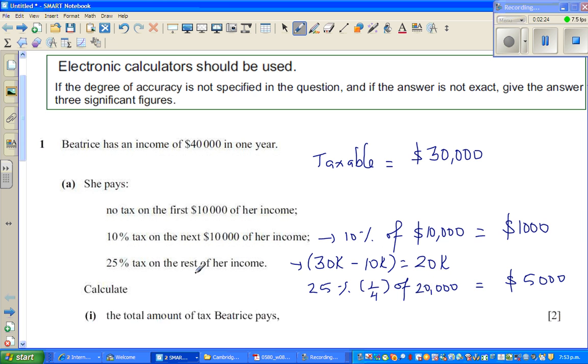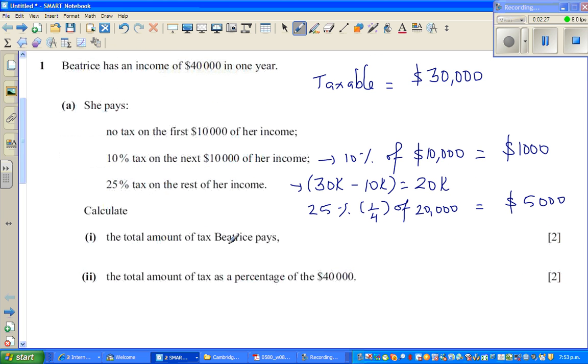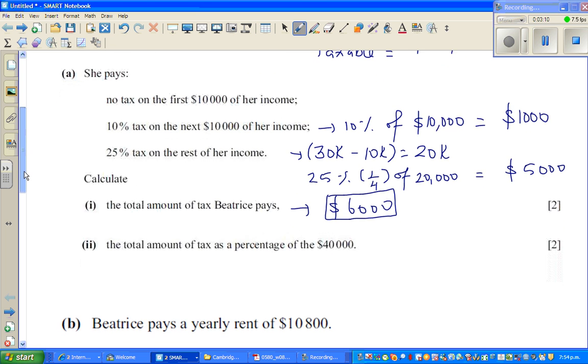So the first question is, the total amount of tax Beatrice pays would be $1,000 plus $5,000, which is $6,000. Again, 10% is one tenth is $1,000 and 25% of $20,000, which is half, and again half. So half of $20,000 is $10,000 and half of $10,000 is $5,000. The total tax she pays is $6,000.